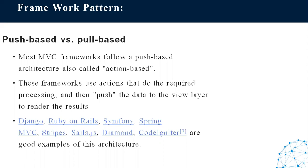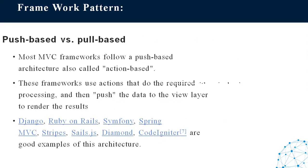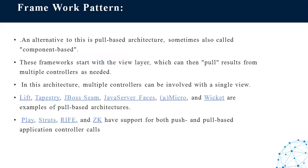An alternative is the pull-based architecture, sometimes called component-based architecture. In this approach, frameworks start with the view layer which can then pull results from multiple controllers. In this architecture, multiple controllers can be involved with a single view. Examples include Lift, Tapestry, JBoss Seam, and Java Server Faces.